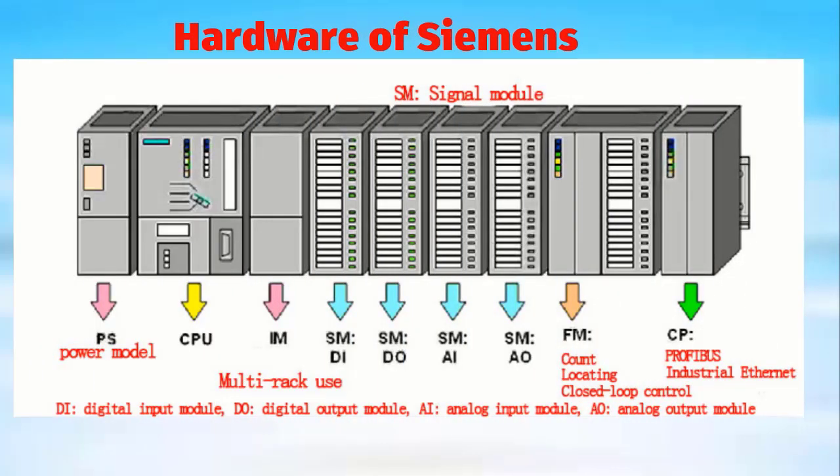The last topic of this lecture is the hardware of the Siemens PLC. The first module is the PS — the power supply module, which provides 24V supply to all the modules and the CPU. Next is the CPU itself. Then the IM — the interface module. Next is the DI — digital input, and DO — digital output. Then the AI — analog input, and AO — analog output. You can connect your input/output modules — digital or analog — according to your project and design.